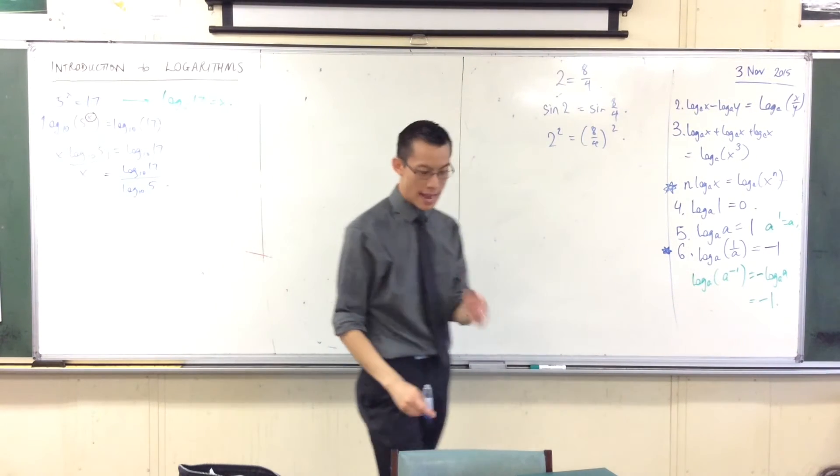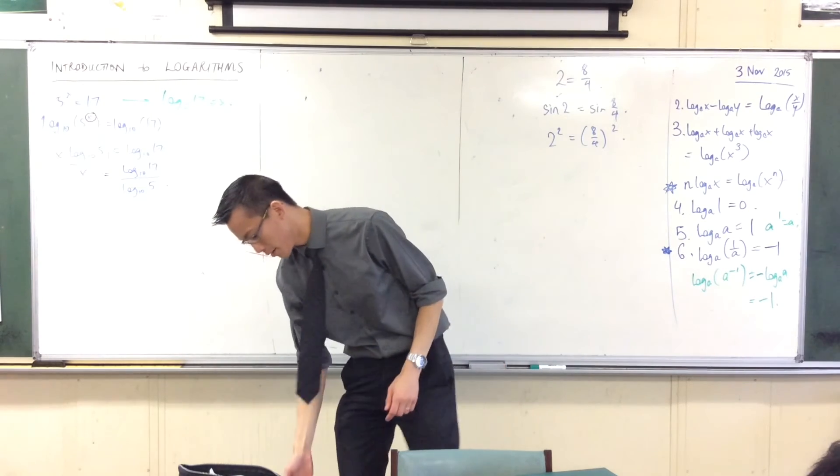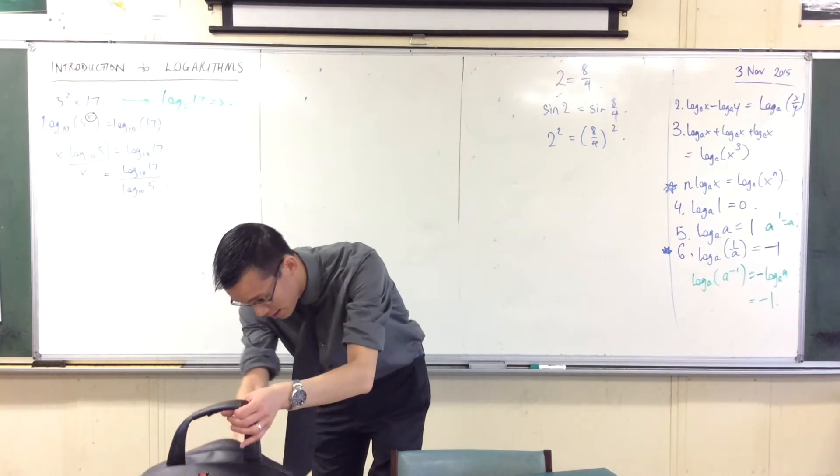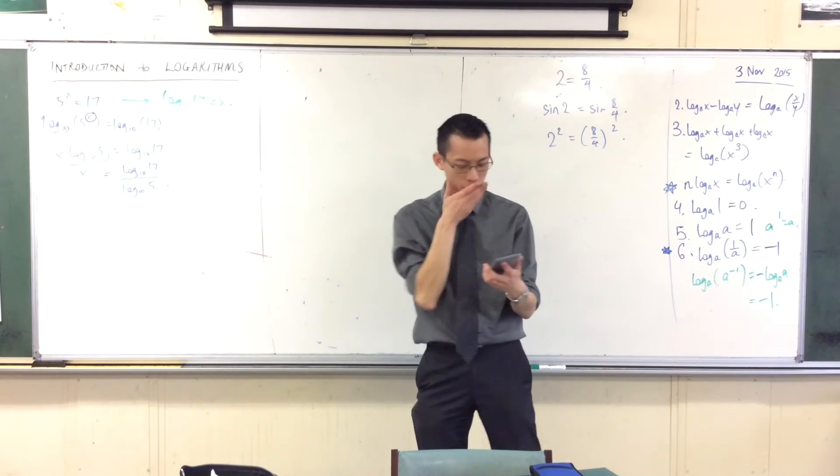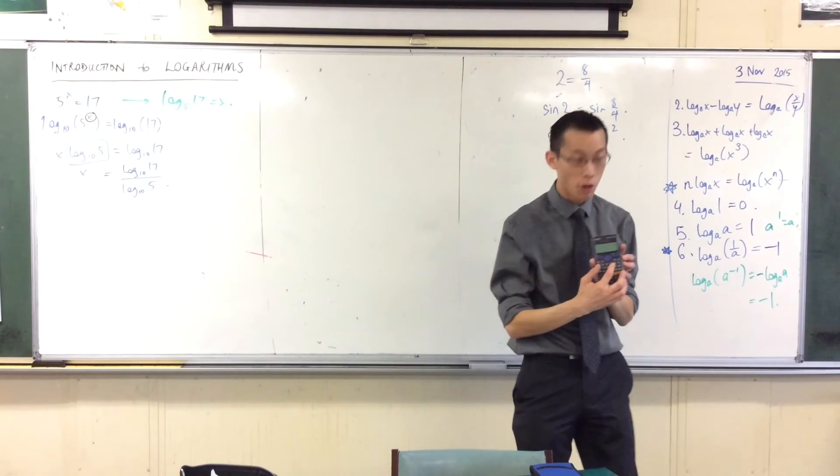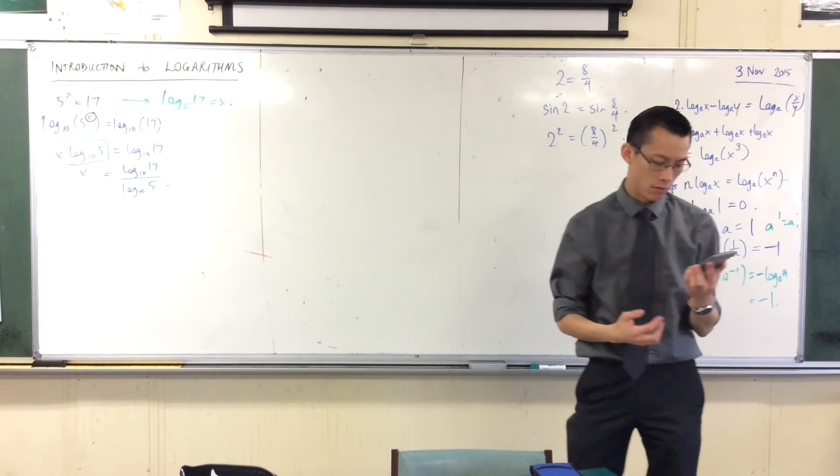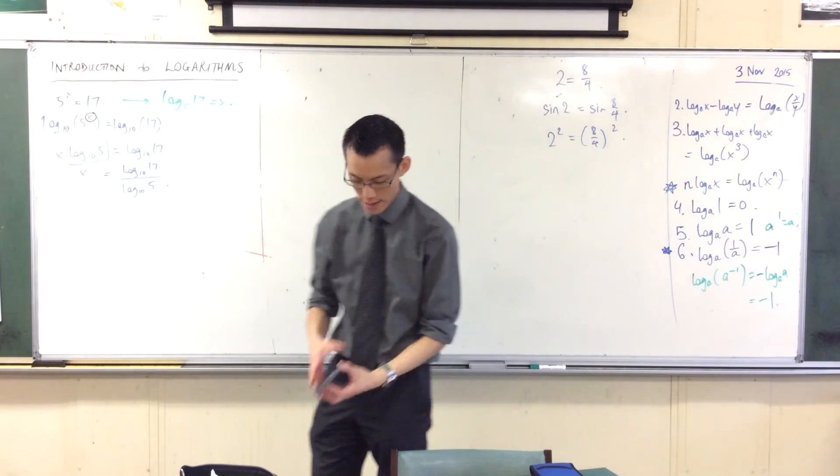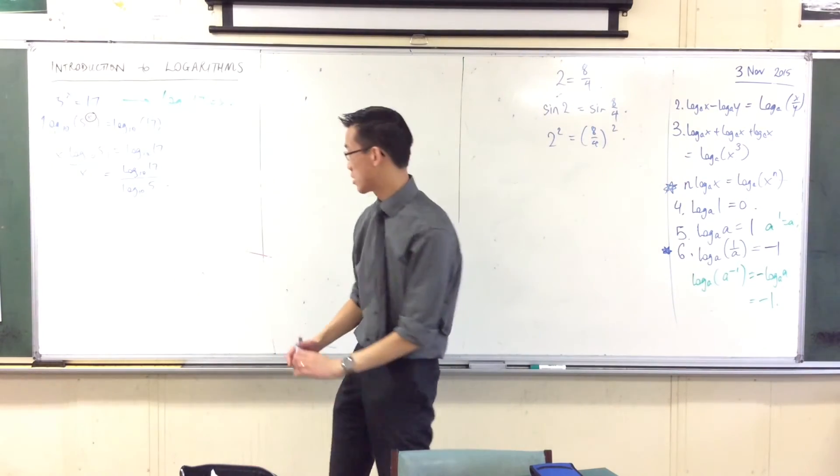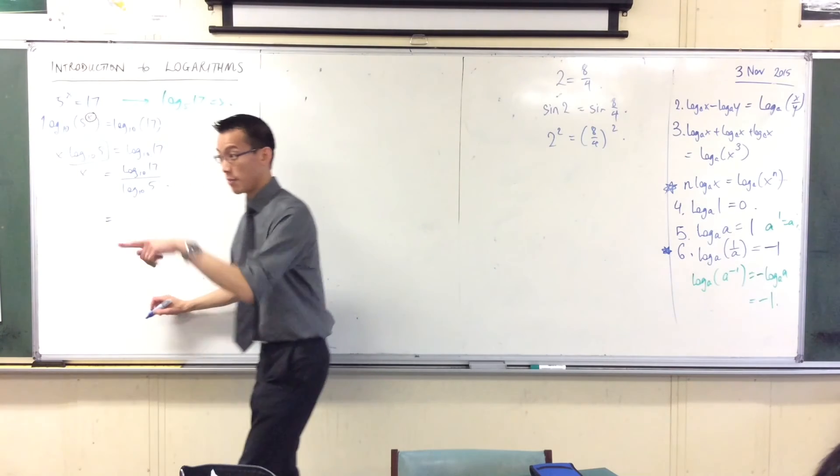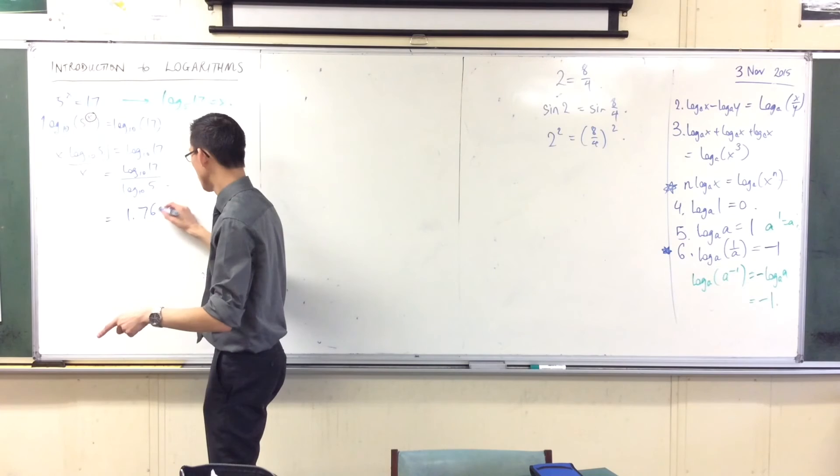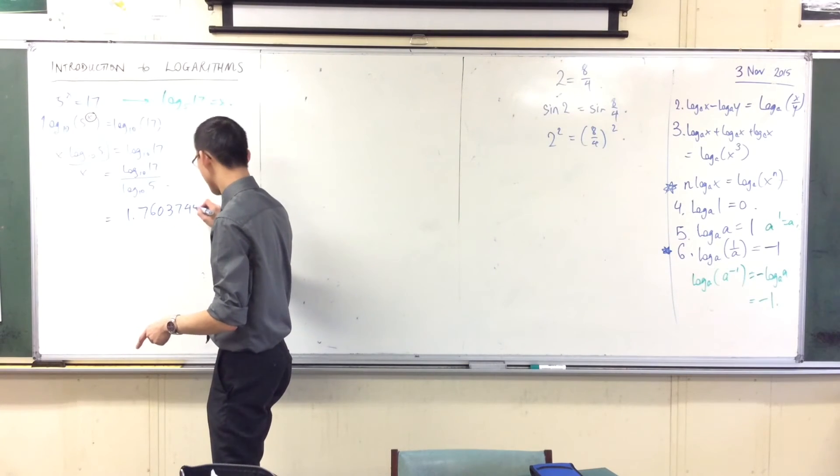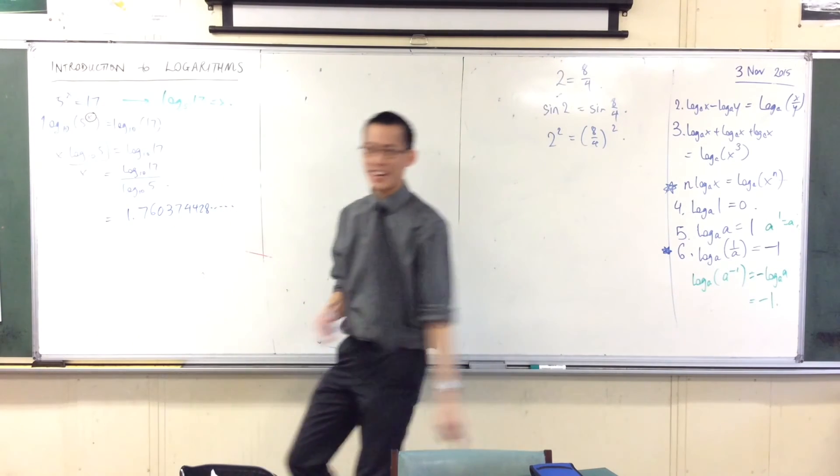Now, this you can put in your calculator, and I actually would like you to do it. Just input it for me. Log. You'll see, the log button is at the top right of your calculator, and you should get a number with a whole bunch of decimal places after it. Who's got them? Do you have them? 1.76, 0.37443.